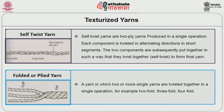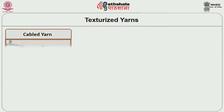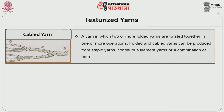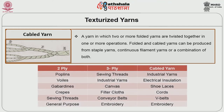Fourth is the folded or plied yarn — a yarn in which two or more folded yarns are twisted together in a single operation, for example two-fold, three-fold, four-fold yarns. Next is the cabled yarn, in which two or more folded yarns are twisted together in one or more operations. Folded and cabled yarns can be produced from staple yarns, continuous filament yarns, or a combination of both. Cabled yarn has more thickness compared to a plied yarn. End uses of plied yarns: two-plied yarns are normally used for poplin fabrics, voile fabrics, gabardine fabrics, crepes, sewing threads, and general purpose. Three-ply yarns are used for sewing threads, industrial yarns, canvas fabrics, filter cloths, conveyor belts, and embroidery yarns. Cabled yarns are used for heavy industrial purposes such as industrial yarns, electrical insulation, shoe laces, cords, V-belts, and embroidery yarns.